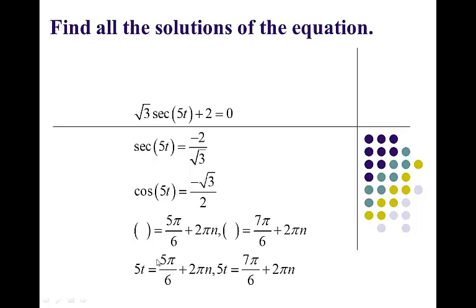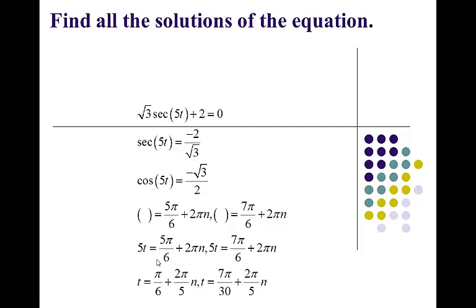Now I put the 5t in and divide by 5. My final answer is pi over 6 plus 2 pi over 5 times n, and 7 pi over 30 plus 2 pi over 5 times n. If I ask for the period of cosine of 5x, you'd do 2 pi over 5 — and there it is, that's always the period of the function. This really was 5 pi over 30 reduced to pi over 6, and 7 pi over 30 stays. These values of t make the original equation a true statement because multiplying by 5 gives an angle whose cosine is negative square root of 3 over 2.